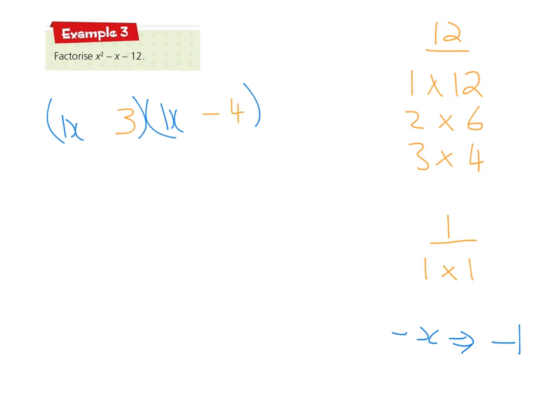And we can now do our small face, our big face, and just ensure that we've done that correctly. So 3 times 1x gives me 3x. And 1x times minus 4 gives me minus 4x. And 3 minus 4x gives me minus 1x, which is indeed the coefficient here. So we've done that perfectly correctly.